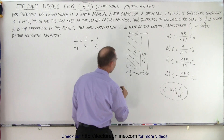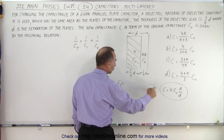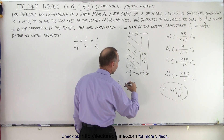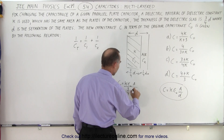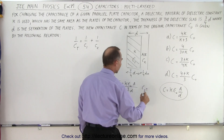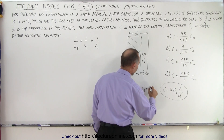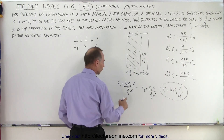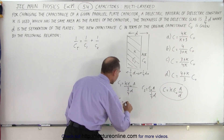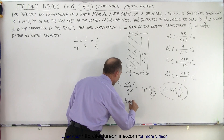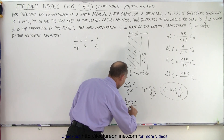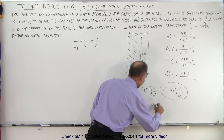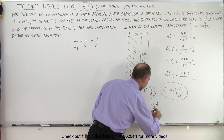First of all, we have C1, and that would be equal to the dielectric constant K times epsilon-naught times A divided by the distance, which in this case is three-quarters D. And for C2, that is equal to — we don't have a K, that's just one — so epsilon-naught A divided by one-quarter the distance. Simplifying that a little bit, we can say C1 is equal to 4K times epsilon-naught times A divided by 3D. And C2 is equal to 4 epsilon-naught A divided by D.